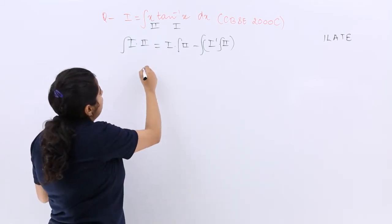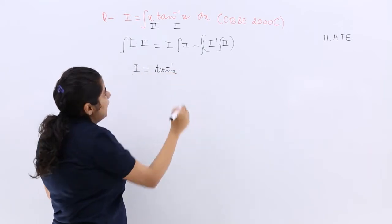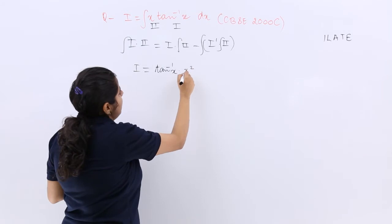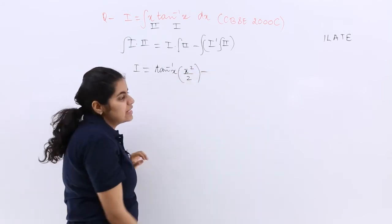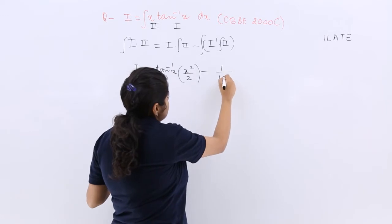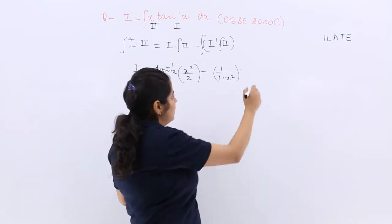Now first function tan inverse x into integration of second x, integration is x square by 2, minus differentiation of first, differentiation of first into integration of second, integration of second, whole integration.